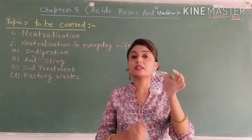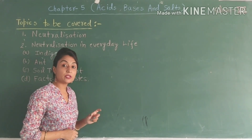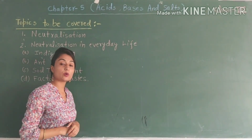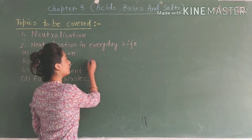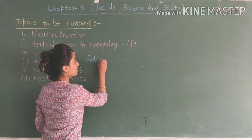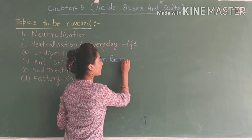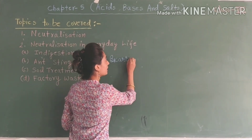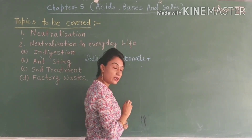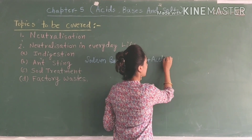When we mixed the acid and base, CO2 was released and we made salt and water. This process is called neutralization. The base we used is baking soda, which is sodium hydrogen carbonate, and we mixed it with acetic acid.